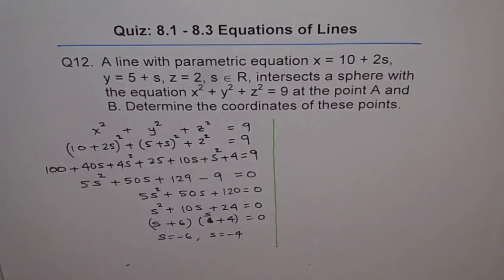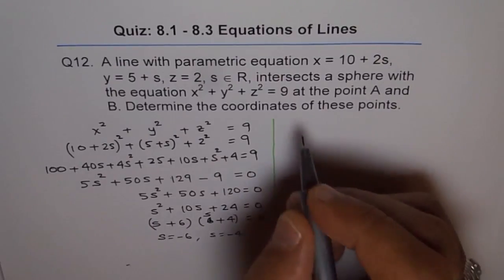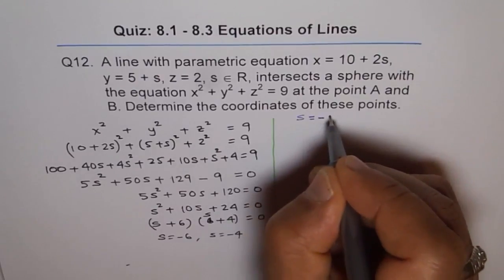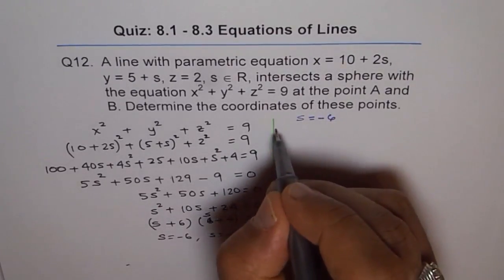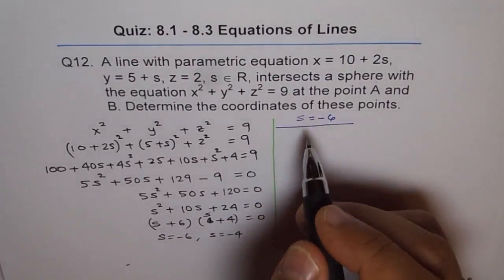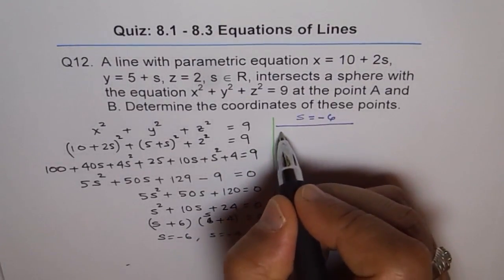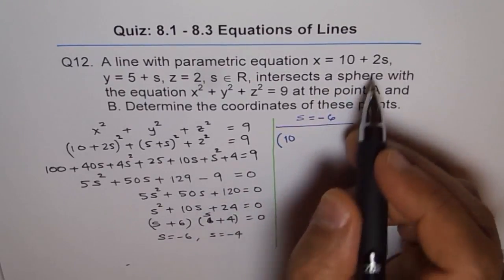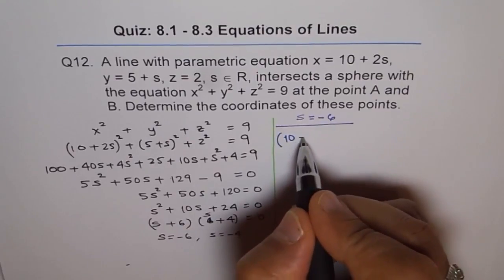So let's find out what the points are. If I plug in s equals minus 6, then what do I get? s equals minus 6 and then we find first set of points. So x will be equals to, we get a point which is 10, and if I put minus 6 here, I get minus 12.